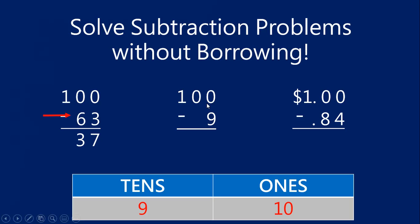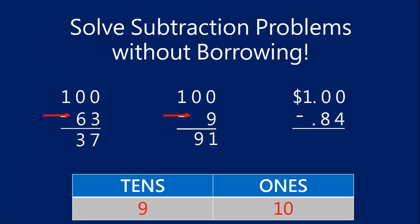Next equation: 100 minus 9. Work left to right, starting in the tens place. There are no numbers in the tens place — treat it as zero. Zero plus what equals nine? It's nine. Then move to the ones place: nine plus what equals 10? Nine plus one equals 10. So 100 minus 9 equals 91. This makes sense — if I'm at 91 and count on nine: 92, 93, 94, 95, 96, 97, 98, 99, 100. So just move left to right: add to nine, add to 10.